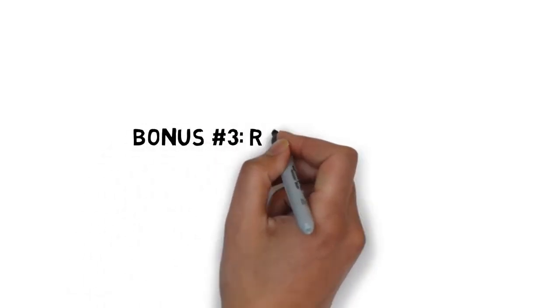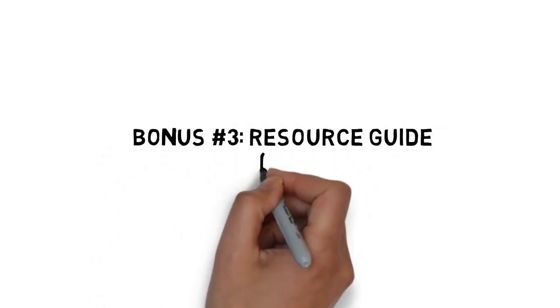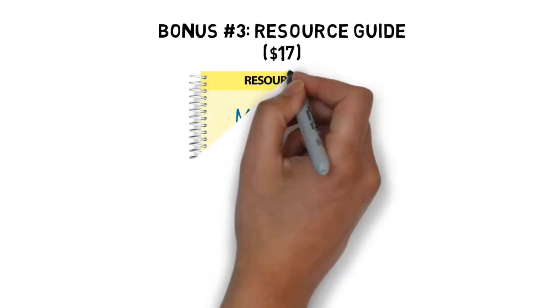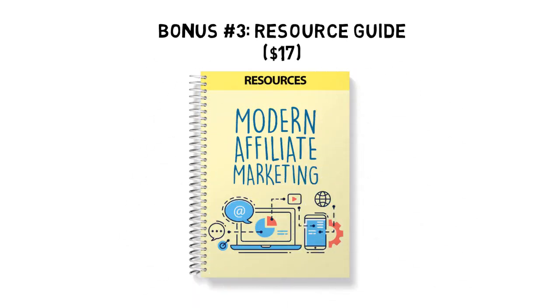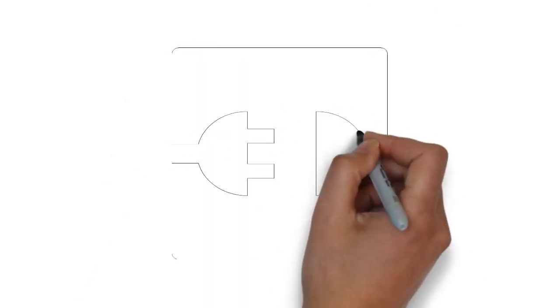Fast action bonus number three, modern affiliate marketing strategies resource guide, valued at $17. The resource guide gives you a quick point of reference to all of the resources mentioned throughout the guide. This makes it easy to plug in and stick with what you're looking for.